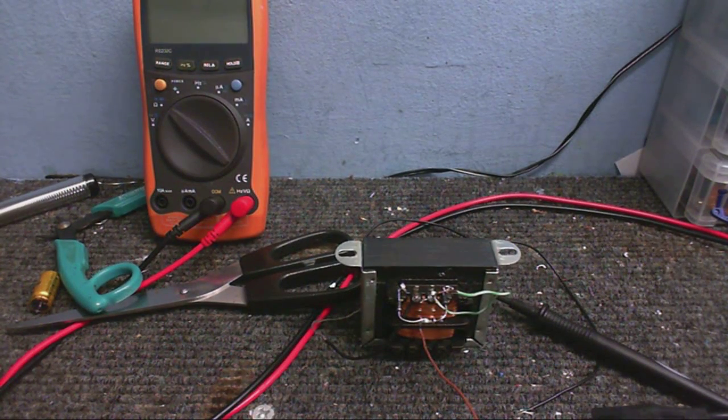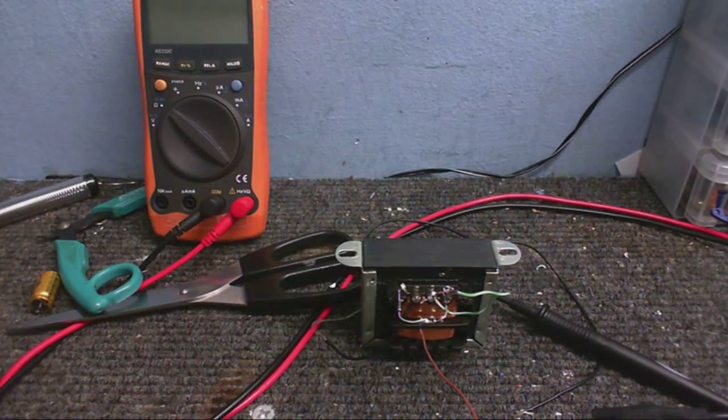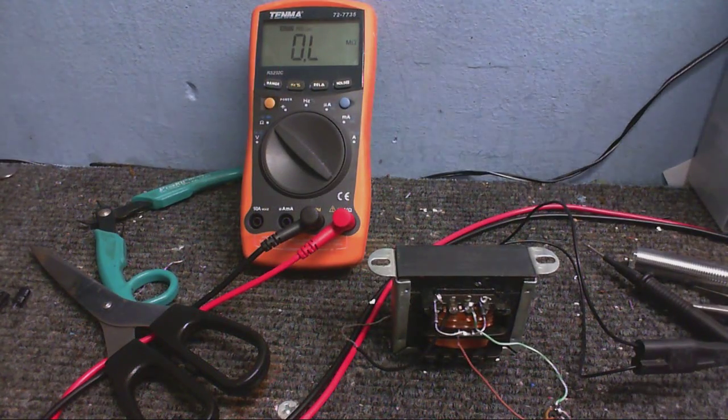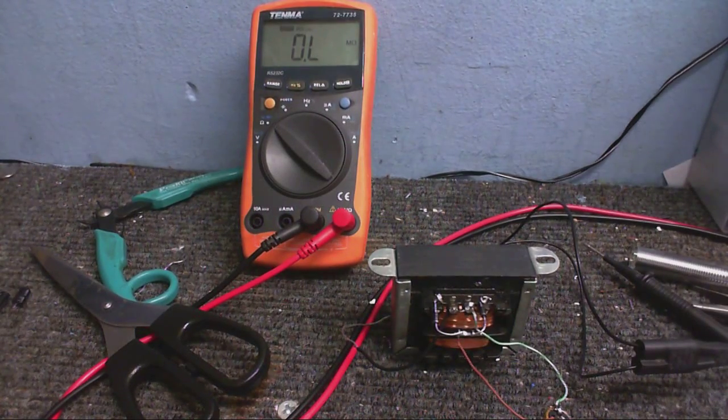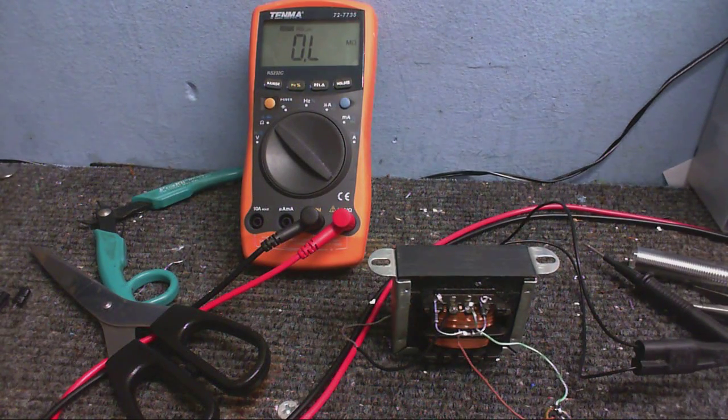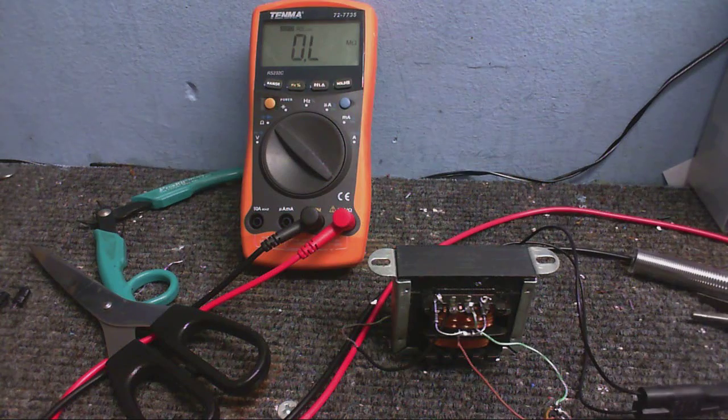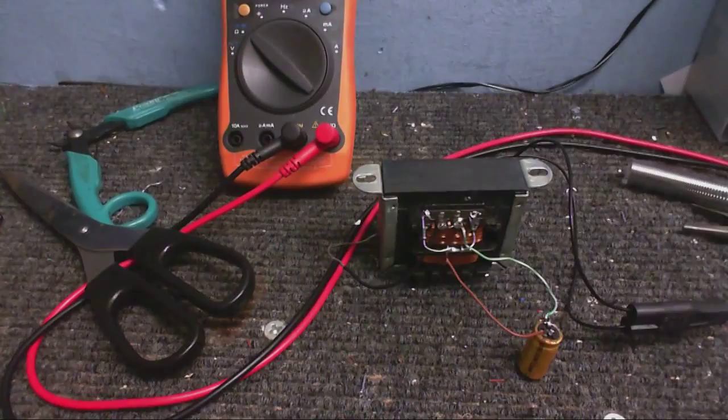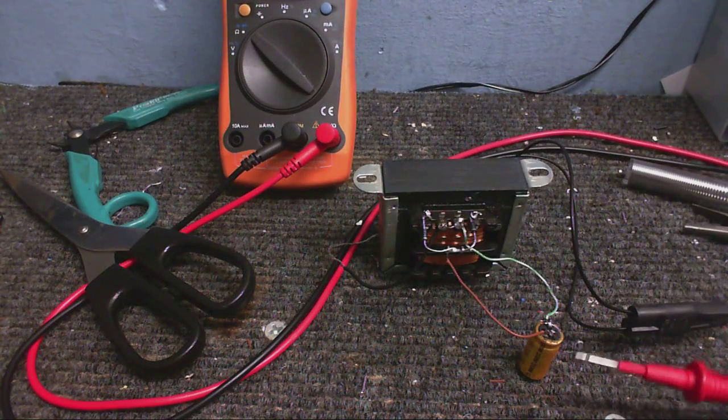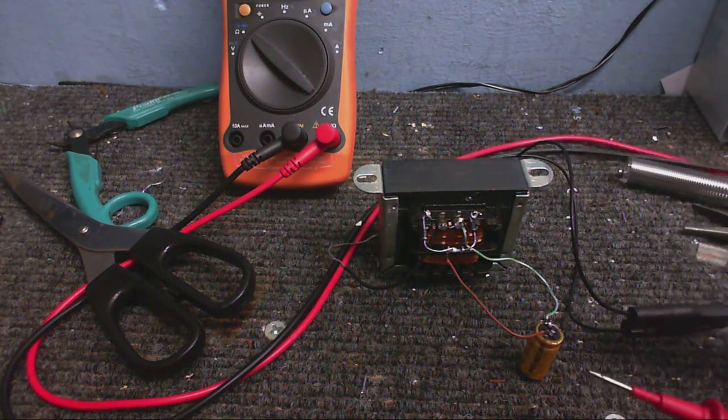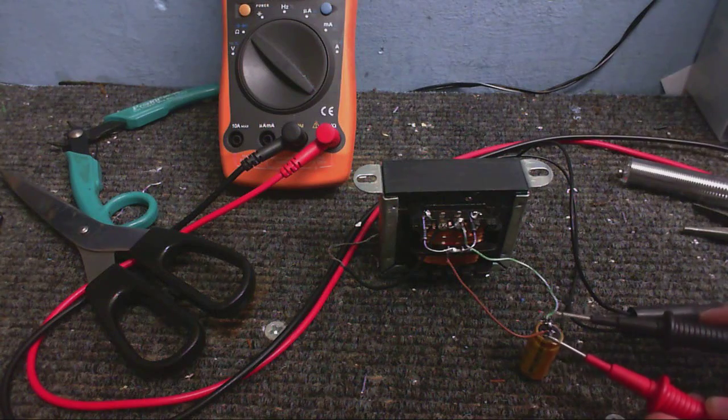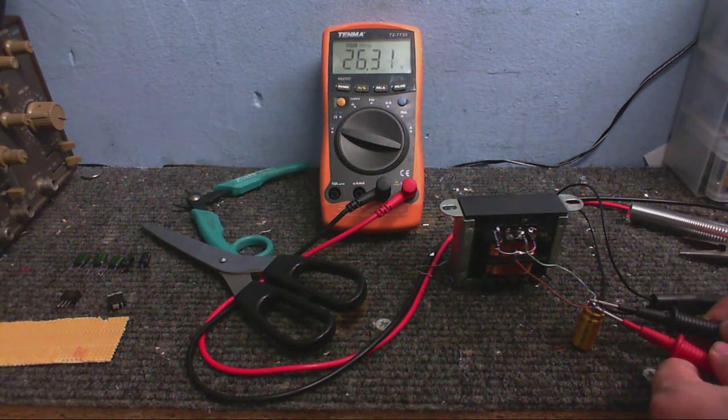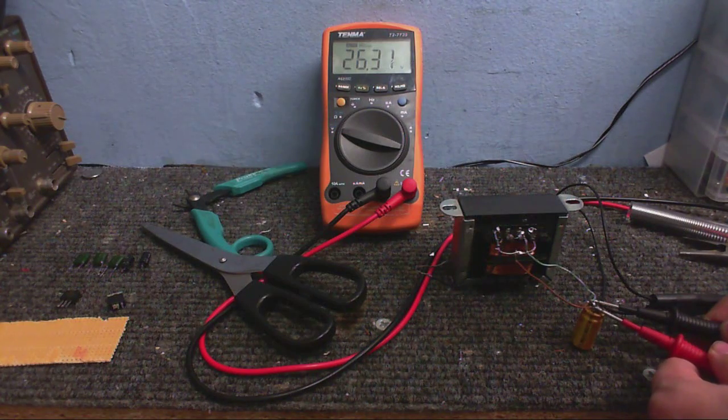So if I was to put a small capacitor across that, we can actually measure the output voltage. Alright, so I'm going to plug this in, and let's see what we get. Smoke-emitting diodes! Did you hear me fart? So we've got our transformer plugged in. And a little capacitor. Let's see what the voltage is across that capacitor.